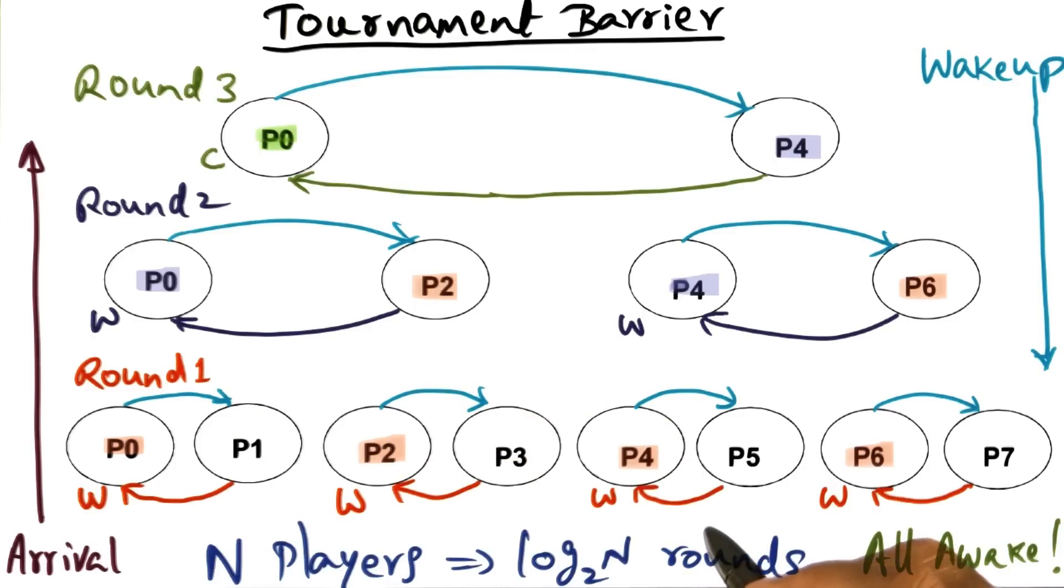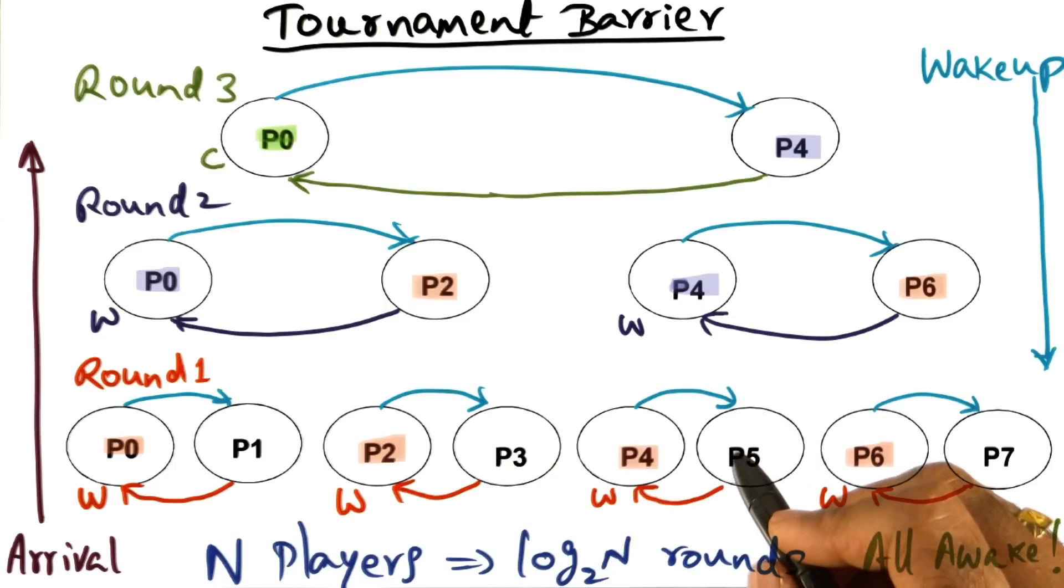Similar to MCS, tournament barrier does not need a fetch and phi operation. So that's a good, common property of both MCS and tournament.